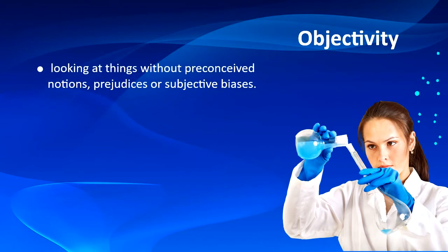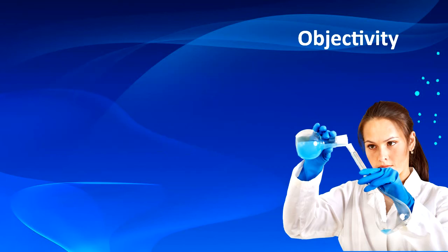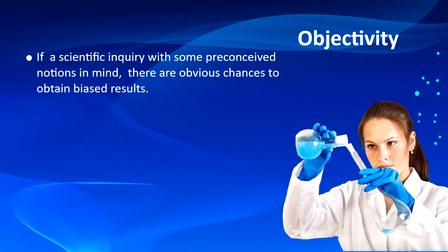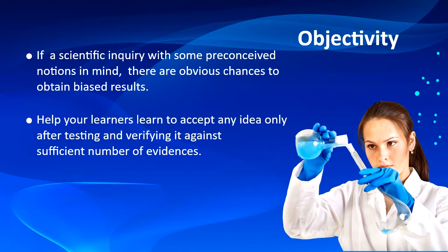Next comes objectivity — the ability of looking at things without preconceived notions, prejudices, and subjective biases. Objectivity helps in developing respect for evidences since an objective person will only rely on unbiased evidences. If somebody sets out for scientific inquiry with preconceived notions in mind, there are obvious chances of obtaining biased results. You should help your learners to learn to accept any idea only after testing and verifying it against a sufficient number of evidences.